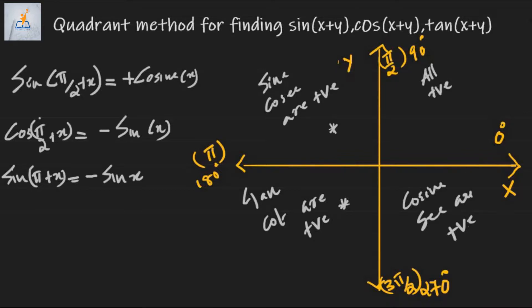Similarly, for cos(π + x), π + x lies in the third quadrant where cosine is also negative. Since the sum is taken with an integral multiple of π only, the function does not change to its co-function — it remains the same. So cos(π + x) = −cos x.